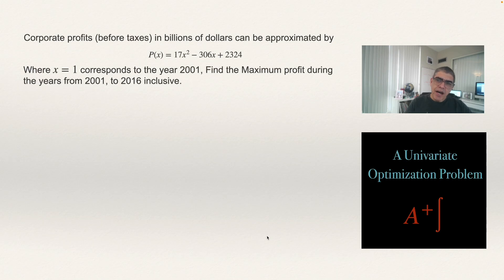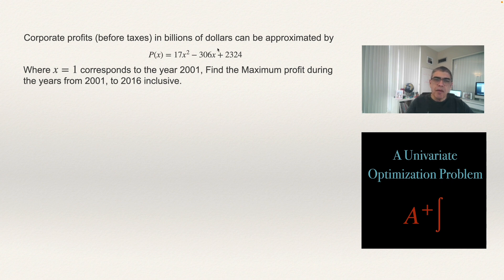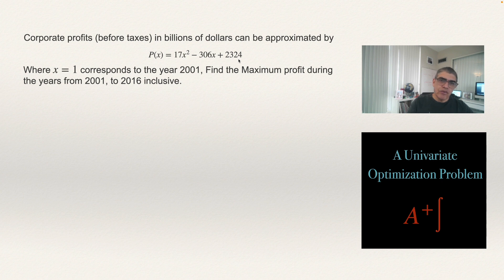In this video I will be explaining how to solve a univariate optimization problem, which is an application of calculus. The problem states that corporate profits before taxes, in billions of dollars, can be approximated by the equation: P(x) = 17x² - 306x + 2324.